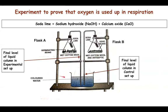Why has the level of colored water risen in the bent tube attached to flask A? It is because the germinating bean seeds respire. For respiration, they need oxygen, which they take from the air inside the conical flask and bent tube. Once the oxygen is used up, they produce carbon dioxide, which is absorbed by soda lime. The partial vacuum created then pushes the water column up, so colored water rises in the bent tube.